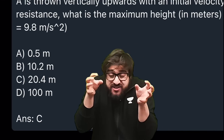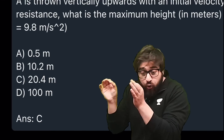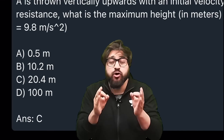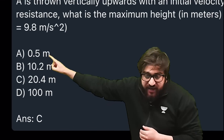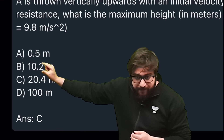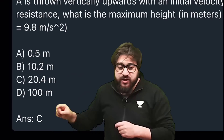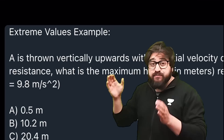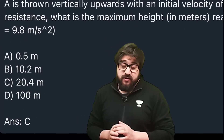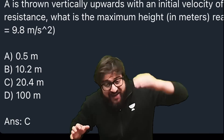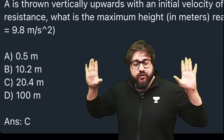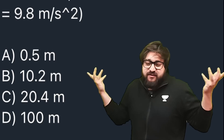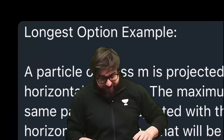Options B and C are close to each other. In 75–80% of cases, it has been seen that extreme values are incorrect, so you should choose from the options that are close to each other. Here, option C — 20.4 meters — is correct. This is the extreme values example. You still only get roughly 50/50 among the remaining options, but this strategy significantly improves your odds.